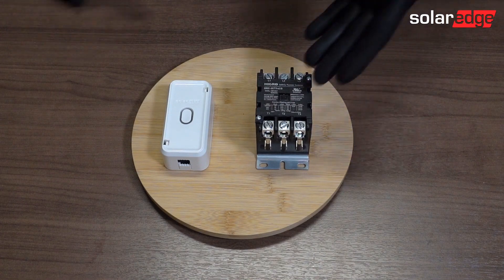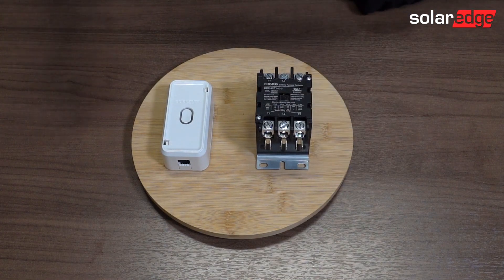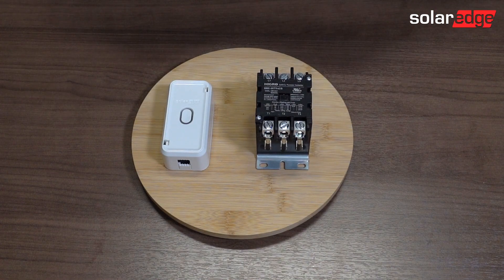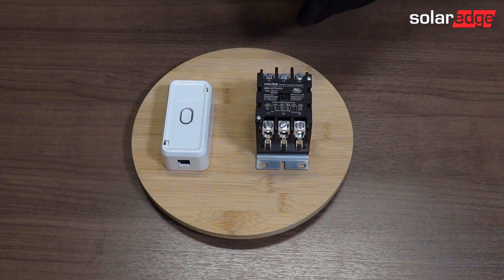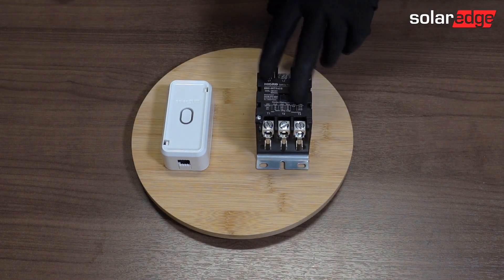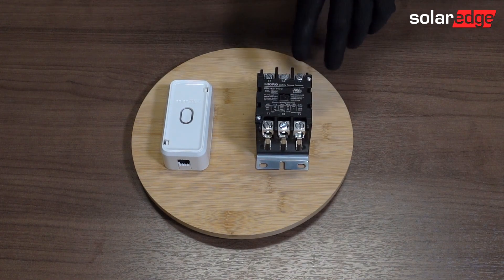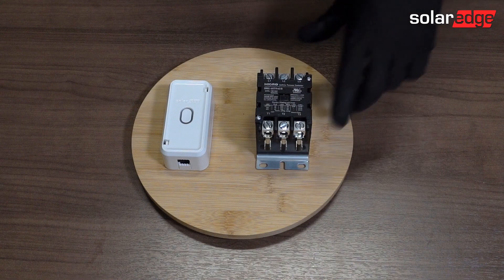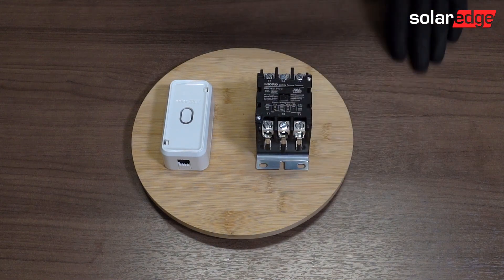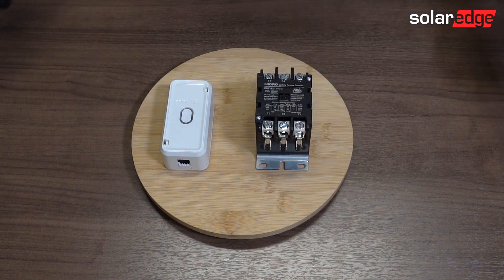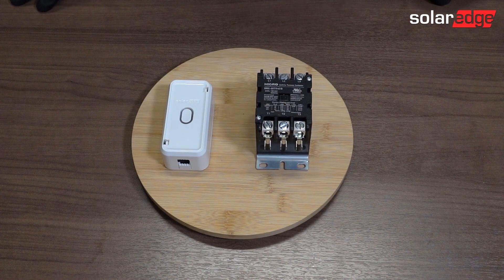Now, the reason we're using a three-pole contactor is because when you get above 60 amps, the two-pole contactors get kind of expensive. And this is a more cost effective solution. So you can use a three-pole contactor in a two-pole application to just abandon this last pole. And that's exactly what we are going to do.